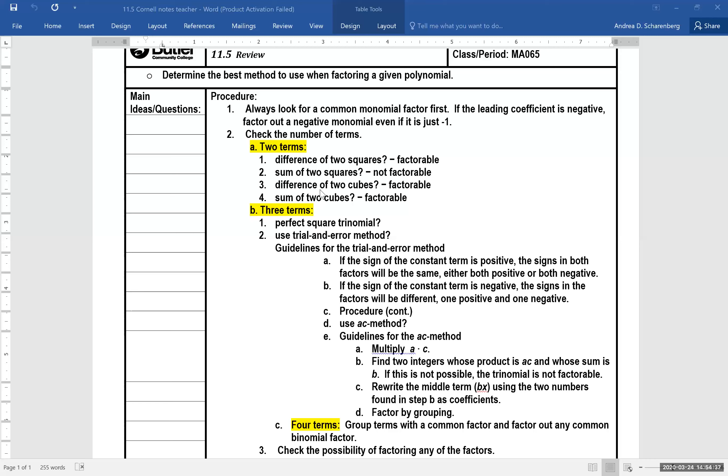Number two, do you have the sum of two perfect squares? That's the one that's not factorable. Number three and four is what we just did in lessons 11.4, factoring the trinomials, the difference of two perfect cubes, sum of two perfect cubes I should say. Are there three terms? Is this a perfect square trinomial? This is where your answer will be something like x minus three and x minus three. The two factors will be identical.